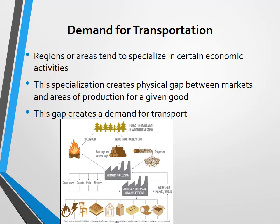If you look at the figure, we see the forest, primary processing, secondary processing, and the end product — each at different locations. When there is a processing plant, other ancillary industries form around that location, creating a cluster. But the end users are not close to the cluster; they're scattered all around. That demand for the product creates the demand for transportation — it has to move from the point of production to the point of consumption.